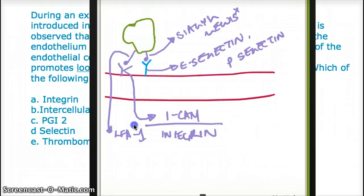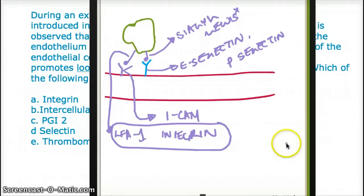Deficiency of LFA-1-integrin causes leukocyte adhesion deficiency. In leukocyte adhesion deficiency, there is neutrophilia — too many neutrophils — but they are ineffective and not working. There is also absent pus formation, and one of the initial symptoms is that the umbilicus will not detach; it won't fall off easily.